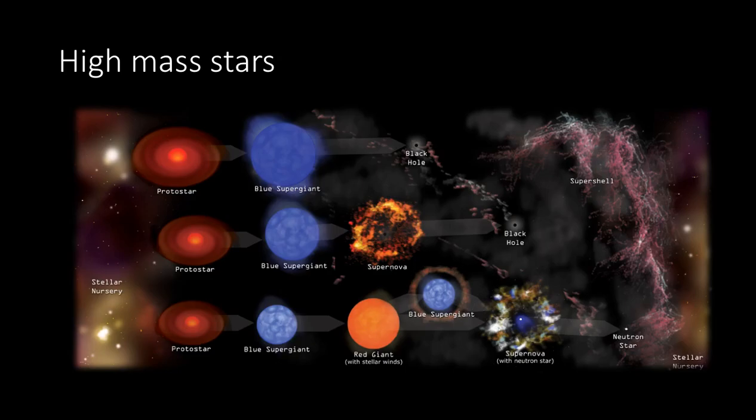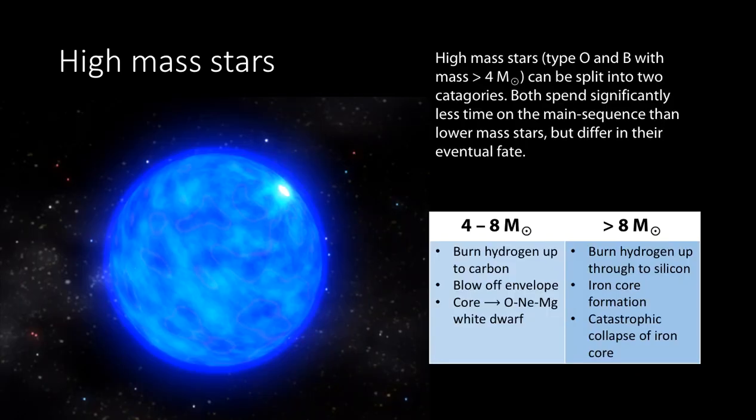These two classes do end in somewhat different ways, and we shall split them into two categories. One category, we could call the intermediate size, is about 4 to 8 solar masses, and the very largest stars are greater than 8 solar masses, and they do have somewhat different final fates.